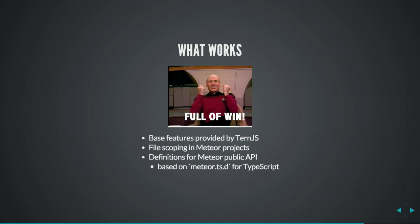And I think it's really cool. So we have the basic features of Tern.js. You have auto-completion and file scoping for Meteor — it means if you declare something in one file, it will not be visible in the second file unless it's global, and it works. And also we have a lot of definitions for Meteor, and I took them from type definitions for TypeScript. They're actually very useful — thanks to all these people who did that. And we could utilize it in this project for JavaScript.